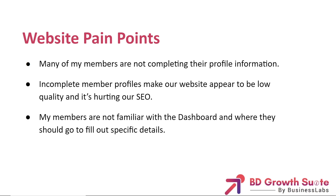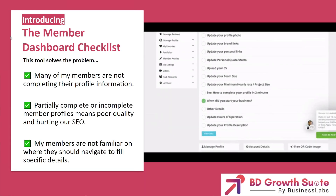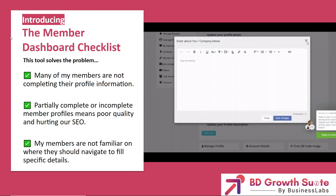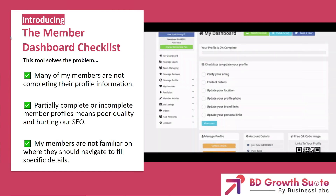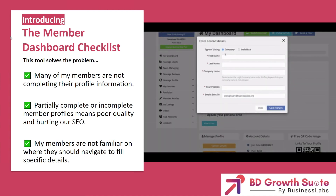We want members to add as much unique information about their businesses, or their personal profile, whatever it might be. We've done a webinar on helping members complete their profiles through email marketing and educating them on how to use the site. This is a more visual way of encouraging members to complete their profiles. Yakin, tell us about what we're looking at in the animated GIF and a bit more about the member dashboard checklist.